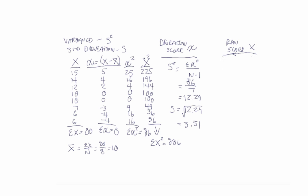So the formula is equal to sum of the raw scores squared minus sum of the raw scores squared divided by n, over n minus 1. We can plug in our numbers. Sum of the raw scores squared is 886 minus sum of the raw scores 80 squared divided by n which is equal to 8, over n minus 1 which is equal to 7.